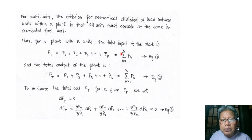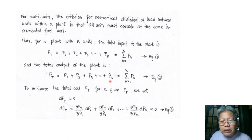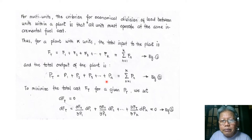The total output of the plant P_T equals the output of unit one plus unit two plus unit three, up to unit k — that is, the summation of P_n from n=1 to k.